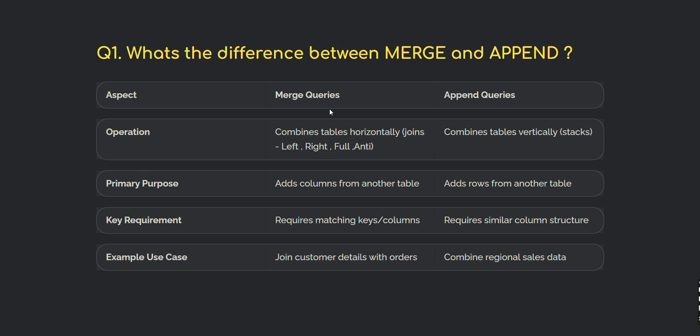The key requirement for merge is matching keys or columns for the join — without matching keys you cannot join two tables. For append, you need a similar column structure. A use case example: to join customer details with orders you perform a merge operation; to combine regional sales data with similar structure, you use append.